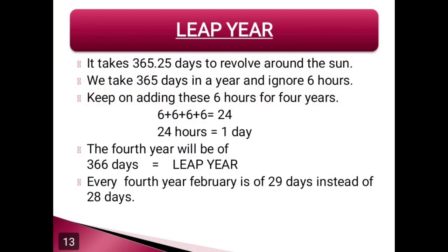Do you know what a leap year is? A leap year occurs once every 4 years and has 366 days. It takes 365 days and 6 hours to revolve around the sun. We take 365 days in a year and ignore the 6 hours. We keep adding these 6 hours over 4 years: 6 + 6 + 6 + 6 = 24 hours, which equals 1 day. So the 4th year has 366 days, which is the leap year. Therefore, every 4th year, February has 29 days instead of 28 days.